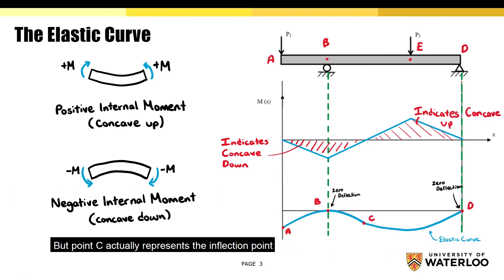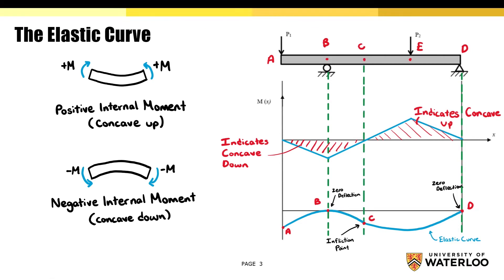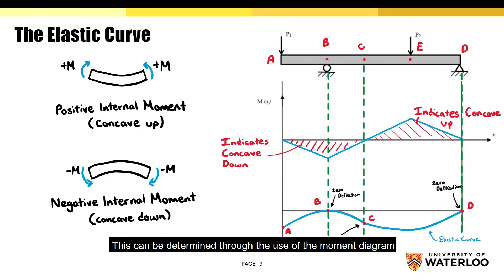You may not realize this, but point C actually represents the inflection point. This can be determined through the use of the moment diagram. It's the point at which the curve changes from concave up to concave down.